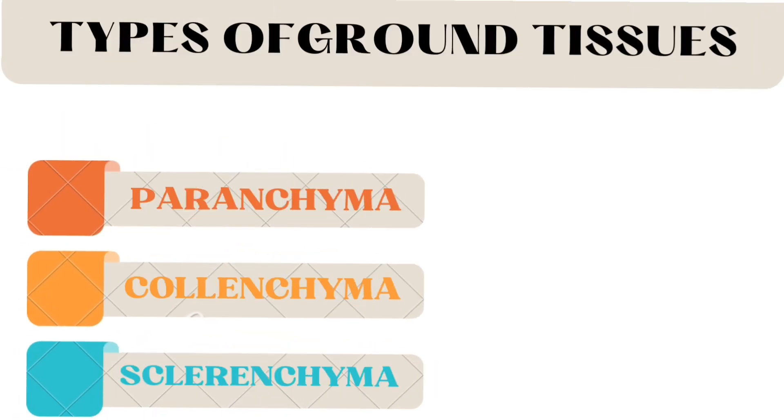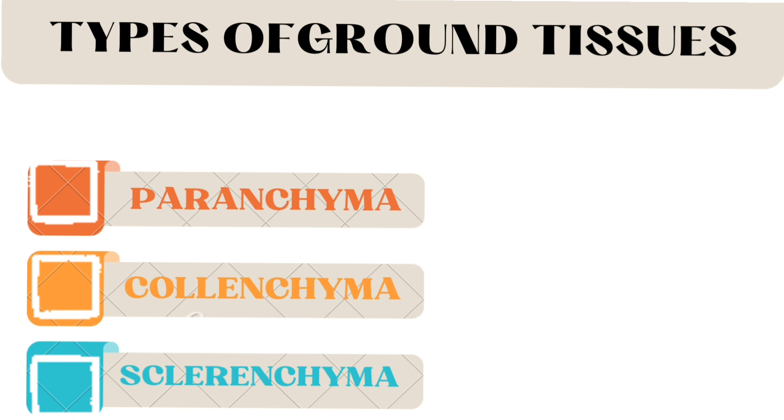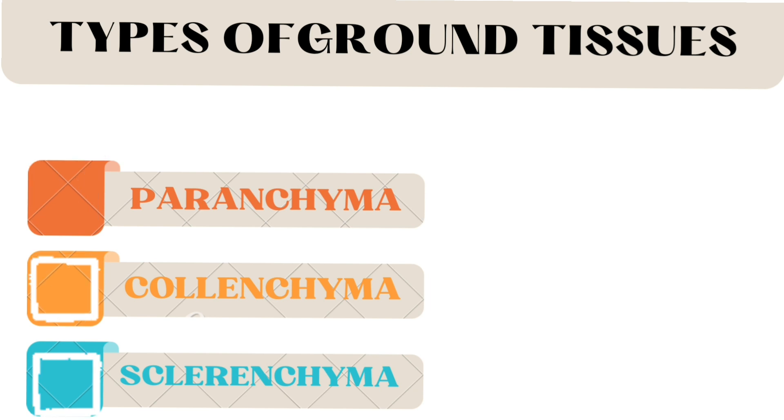Ground tissue is of 3 types: parenchyma, collenchyma, and sclerenchyma.